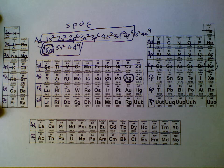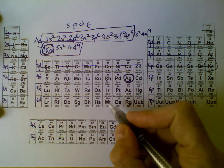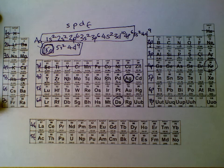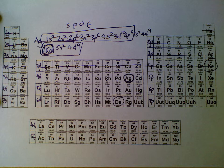How to write electron configurations of really big elements. So let's take Darmstadtium, element 110. Well, we start in the same way.